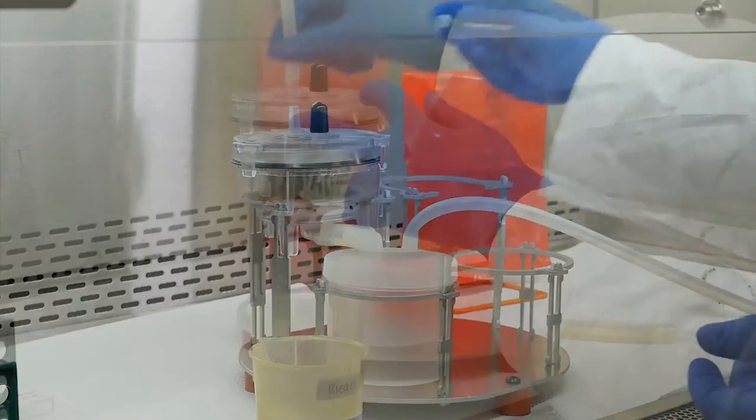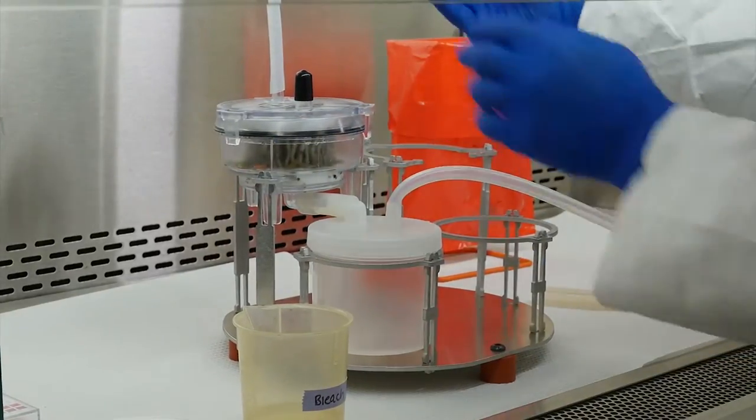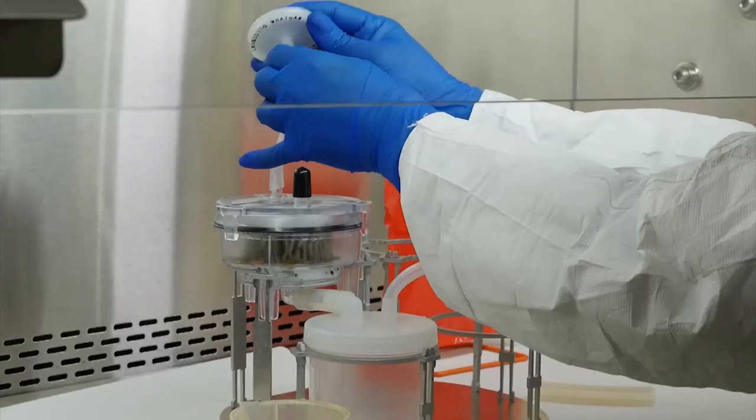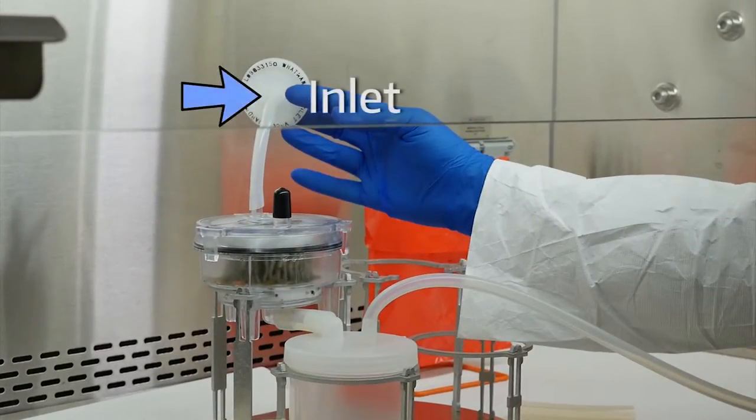Remove the white cap from the filter vent and attach the short, small diameter tubing and a VacuGuard filter. The VacuGuard inlet should face the ViroCap filter. This will help vent the filter when you inject the eluent and help prevent cross-contamination.